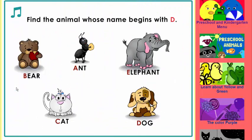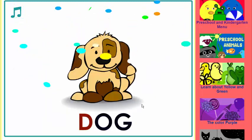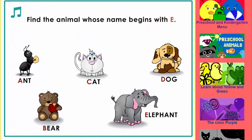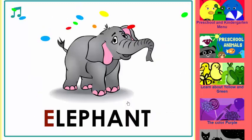Find the animal whose name begins with D. That's right! Dog begins with D. Find the animal whose name begins with E. No! Elephant begins with E. Alright! Elephant begins with E.